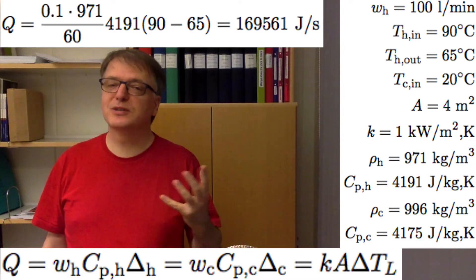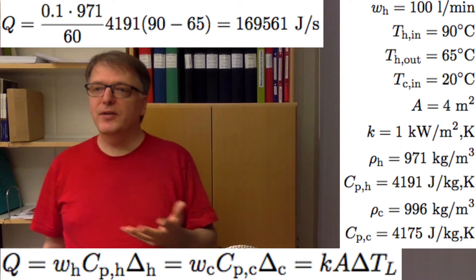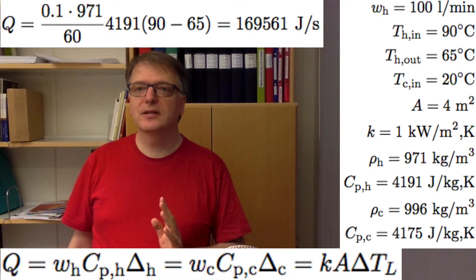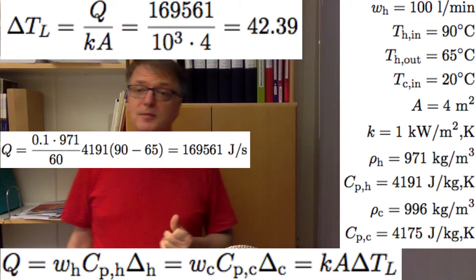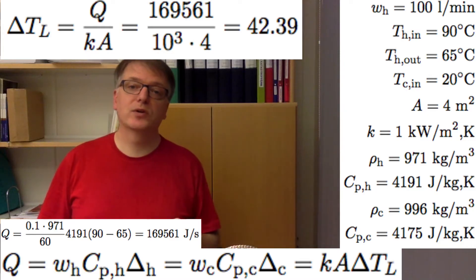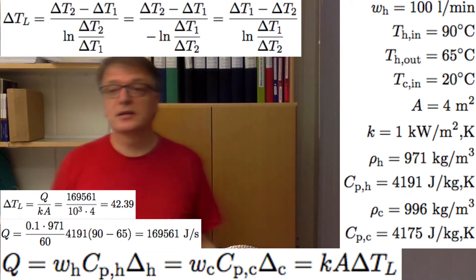When you do these calculations I recommend you to check the units carefully because it's easy to do mistakes. Now we know everything in the energy balance Q = kA ΔT_L except the logarithmic mean temperature. So we can calculate the logarithmic mean temperature as Q divided by the overall heat transfer coefficient and the area, and we get that to 42.39.